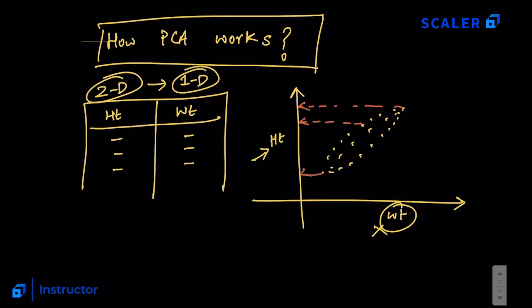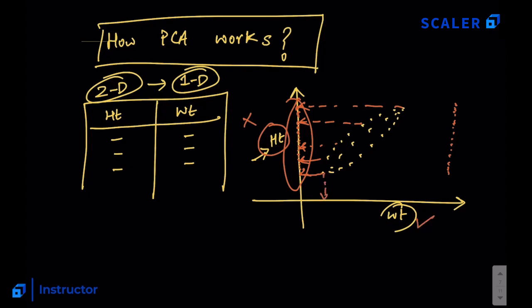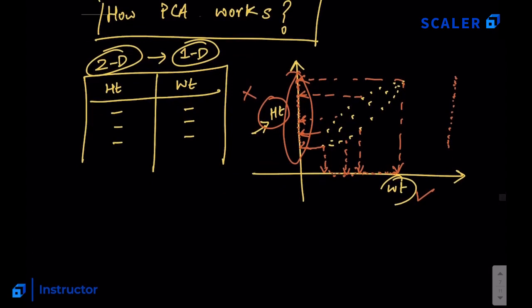If you get rid of weight and map all the data points to the y-axis, your data becomes a simple line of points on that axis. Alternatively, you could get rid of height and keep only weight, mapping points to the x-axis. The problem with this approach is that you have lost all the information from one dimension, but we want to keep as much information as possible.